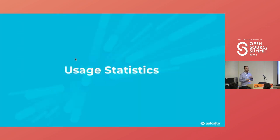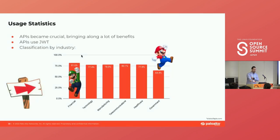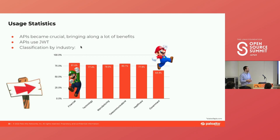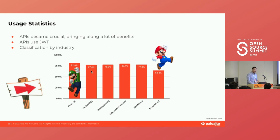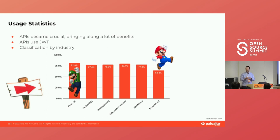Before we proceed, let's see some statistics. APIs have become crucial and bring a lot of benefits. When we say APIs, we imply also JWTs, because APIs usually work with JWT tokens. According to the State of APIs, at least the financial sector shows about 80–81% of websites using APIs — almost everyone. Technology and manufacturing industries also show high adoption, with government agencies a bit slower to adapt but still having significant API usage.